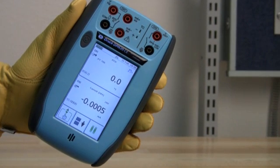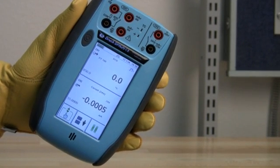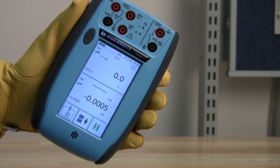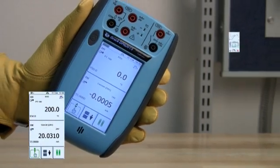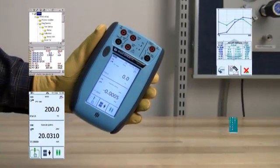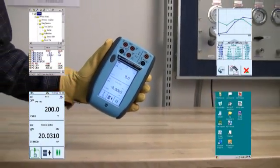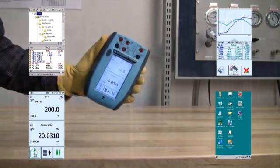This video describes the innovative DPI620 from GE Sensing, which combines a multifunction documenting calibrator, a HART communicator, and a Windows CE industrial computer into one instrument.